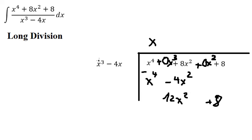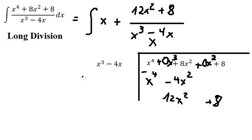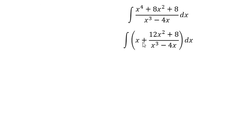Because the numerator power 2 is smaller than denominator power 3, we can write it like this. So the remainder we need to put here. We have the integral of x squared over 2 plus the integral of 12x squared plus 8 over x cubed minus 4x dx.